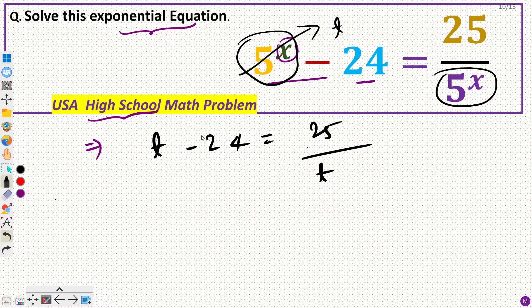Now you can name this any other variable, whatever you wish. Now we can multiply this, so we can rewrite this as t times t minus 24 equals 25.